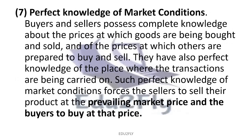Next, perfect knowledge means that buyers and sellers have full knowledge of which goods are being sold at which price. This is perfect knowledge, and it is reflected in the demand and supply graph intersecting at the market price.